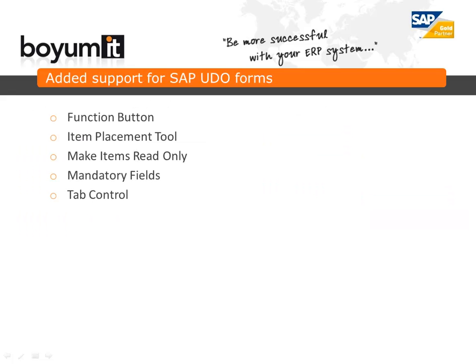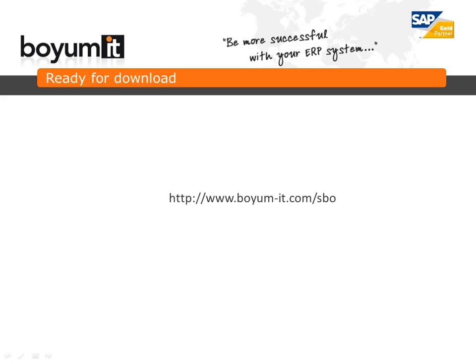The last new feature is that we have added support for SAP UDO forms. This means that things like function button, item placement tool, etc., now work on SAP UDO forms. As always this release is available for download at boem-it.com/sbo. Thank you for watching this What's New presentation.